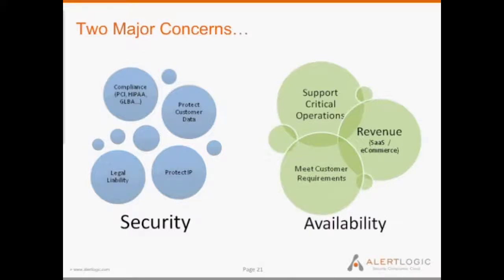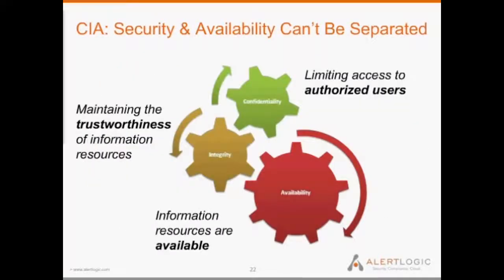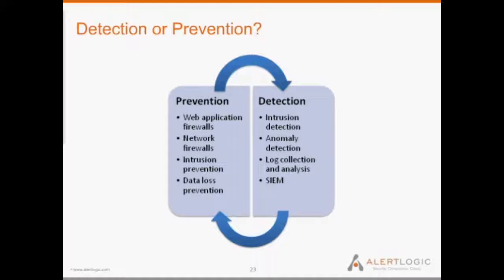It's important to think of security as spanning the traditional CIA triad — a concept that's been around for years and is just as relevant today. That's thinking about confidentiality, or limiting access just to authorized users; integrity, maintaining the trustworthiness of the data you're processing and the systems that process it; and availability, keeping those services you've worked so hard to develop online and available to your customers. We'll frame security solutions in terms of prevention and detection — two necessary elements to any good security model.